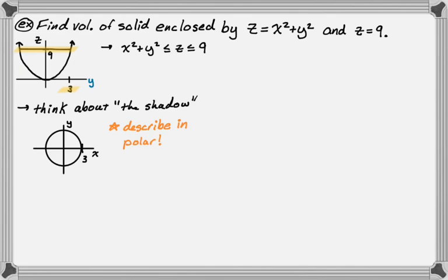So think about theta. So we can go all the way around. So theta is between zero and two pi. Think about r, we can start at the origin, go all the way out to three, which is the radius. So we're going from zero to three. And that's pretty good, because we just found our theta and our r values, our bounds.